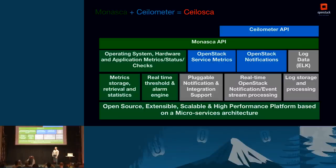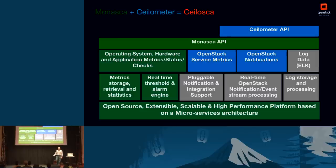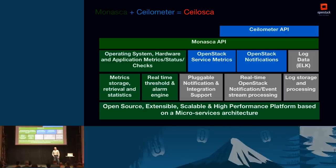Looking at the big picture: the green part is what's already available in MONASCA. MONASCA has been moved to the OpenStack GitHub, so it's there alongside the CEILOMETER code. MONASCA is excellent for scalability and is based on a microservice architecture. What we've done is attach on top of it the ability to deal with OpenStack metrics and OpenStack notifications — the data that CEILOMETER is excellent at collecting. Then we laid the CEILOMETER API on top of the MONASCA API, so at the end you get a single system that behaves as both.